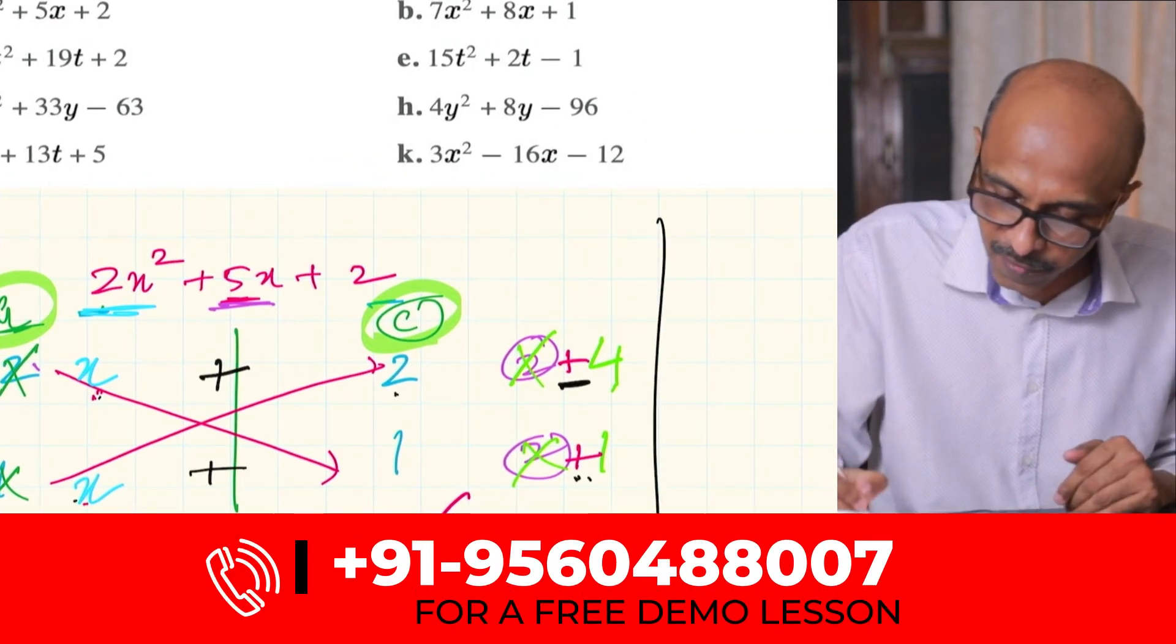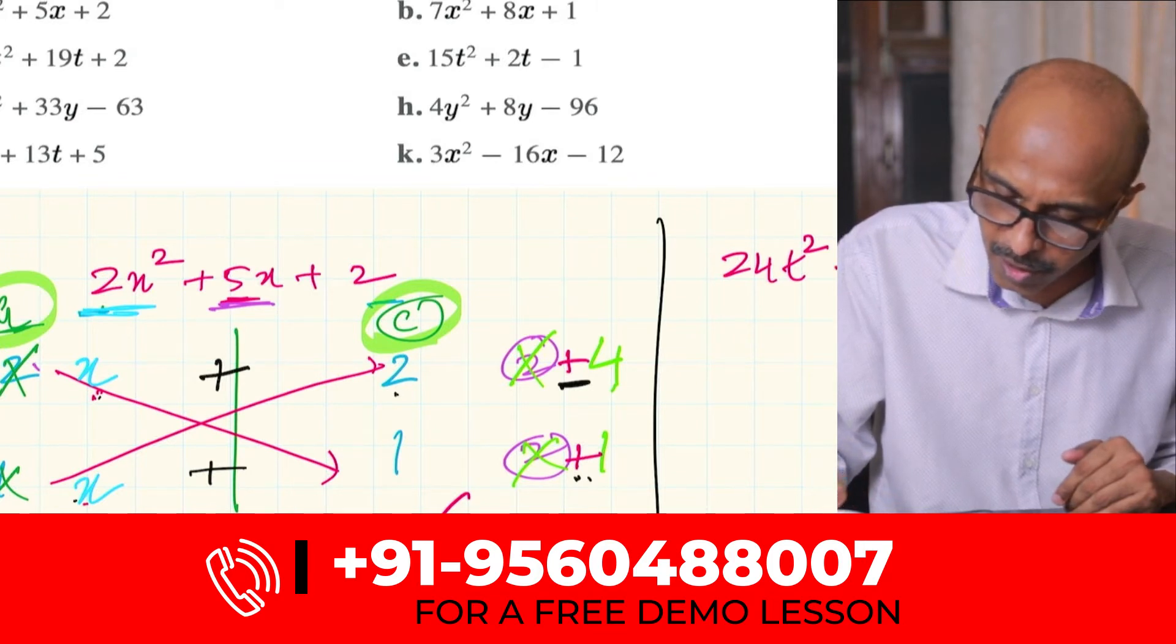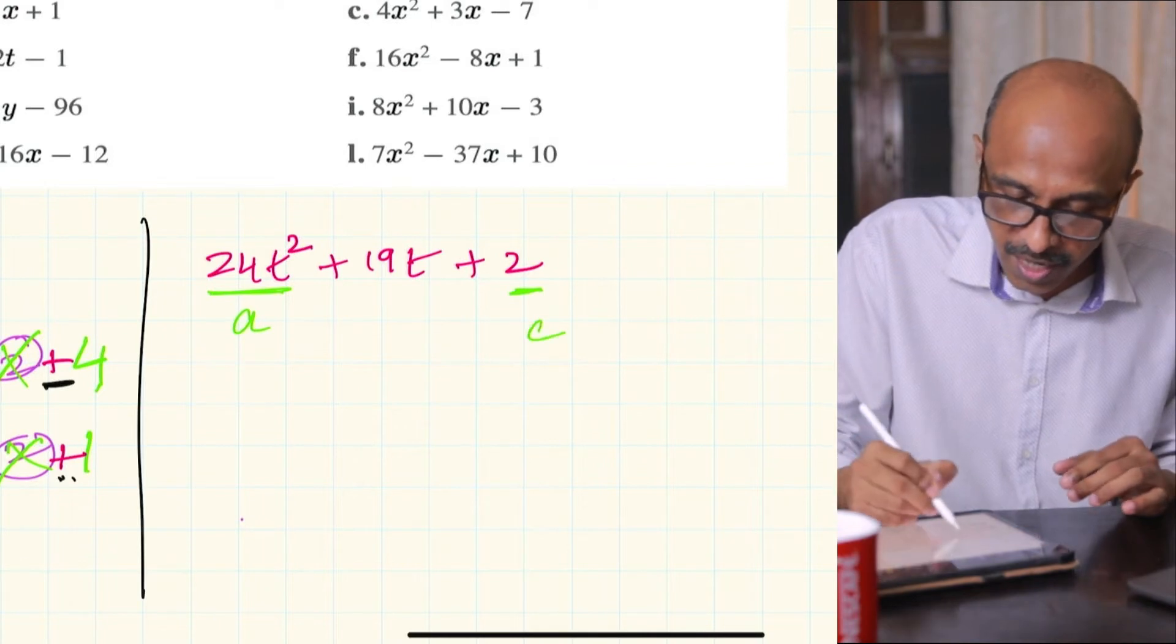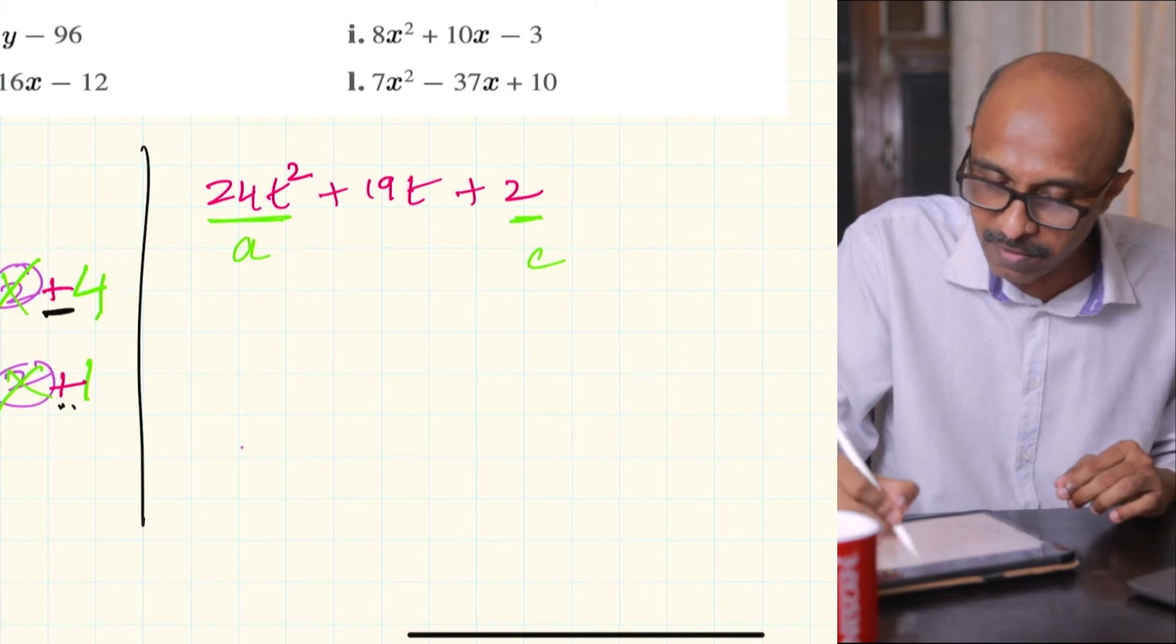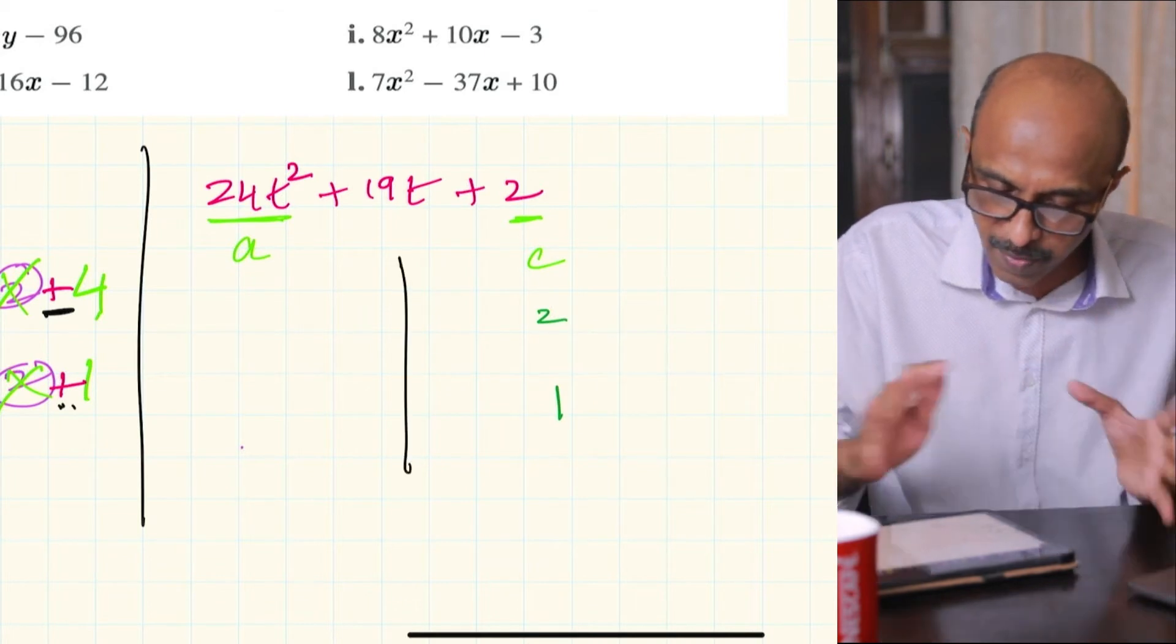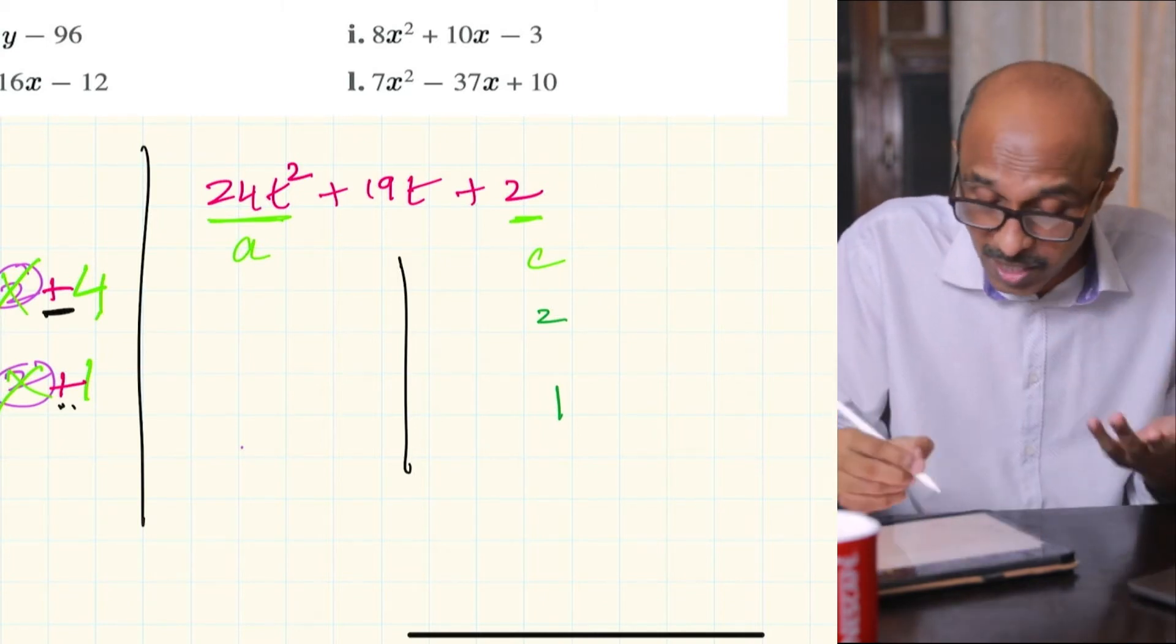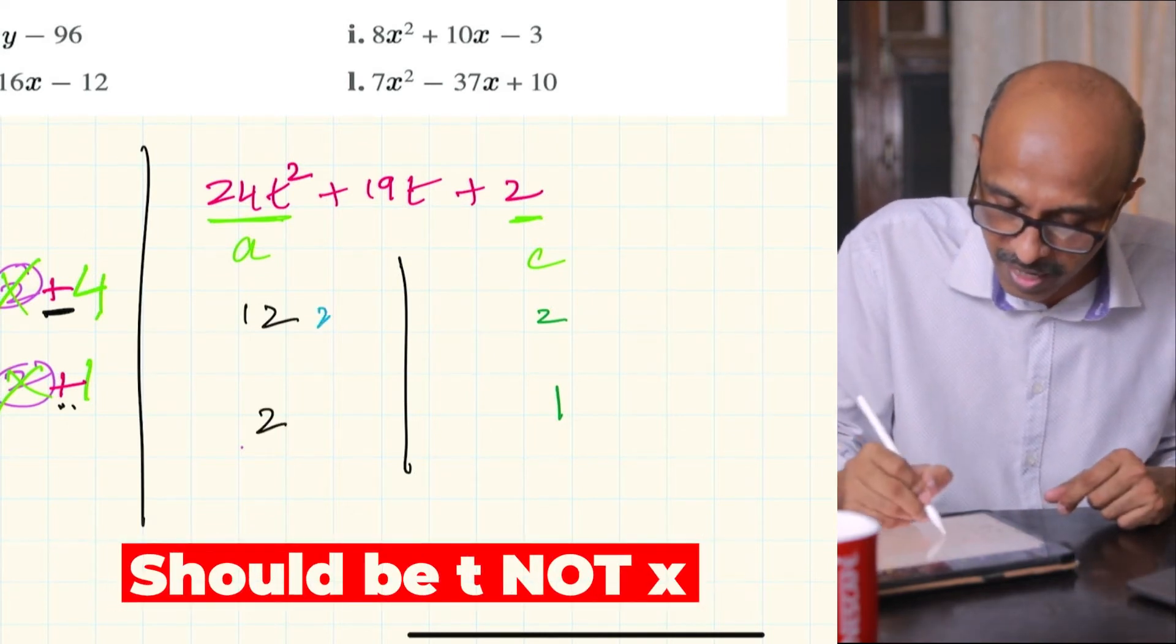I'm going to copy this down first: 24t² + 19t + 2. First, list the factors of A, that's your A and that's your C. A is 24 and C is 2. For 2, we just have one option, it's either 1 times 2 or 2 times 1. But 24, you've got different options: 8 times 3, 6 times 4, 2 times 12. With practice, let's just take 12 and 2 as factors of 24, and remember this has to have a t here.